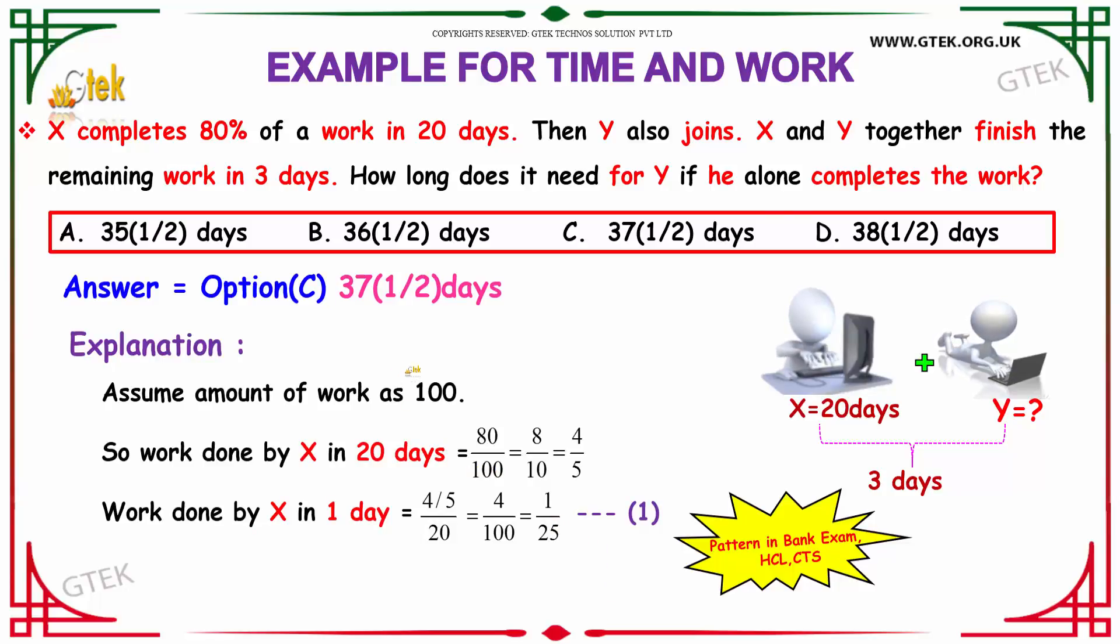Let us see how to apply this logic to solve the question. Let us assume that the work is 100 in total. So, the work done by X in 20 days will be nothing but 80% of 100 that is 80 by 100. Which can be written as on simplification 4 by 5. The work done by X in 1 day will be nothing but 4 by 5 divided by 20. So, 4 by 5 into 20 is 100. Which will be equal to 1 by 25 on simplification. So, the work done by X in 1 day will be 1 by 25.